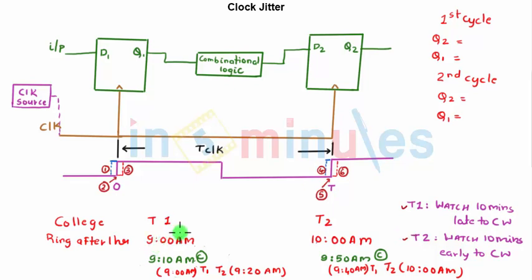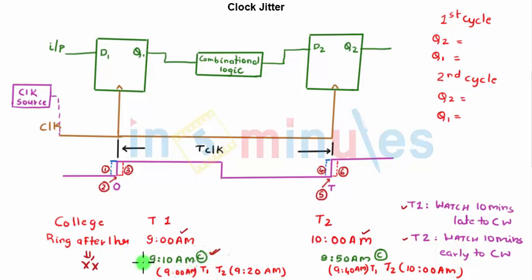Ideally when the bell was ringing, teacher one was entering at 9 a.m. and after one hour teacher two would have entered at 10 a.m. Now with the bell not working, because teacher one's watch is 10 minutes late, when the college watch shows 9:10, teacher one's watch shows 9:00 a.m. Teacher two's watch, being 10 minutes early, is showing 9:20 a.m.